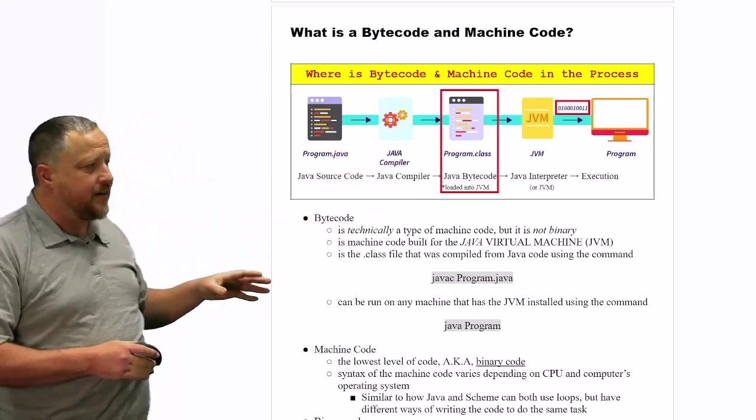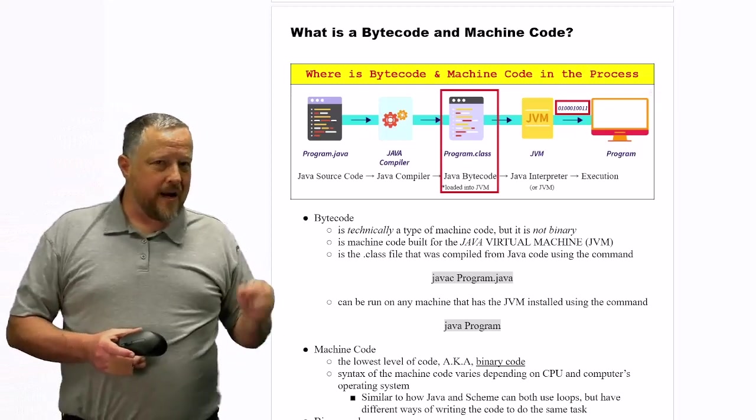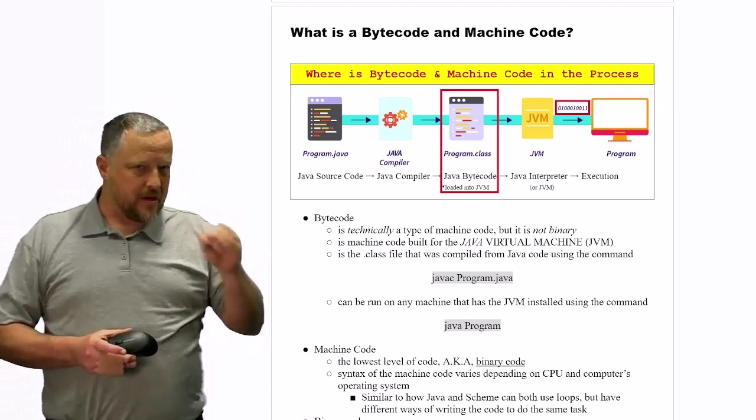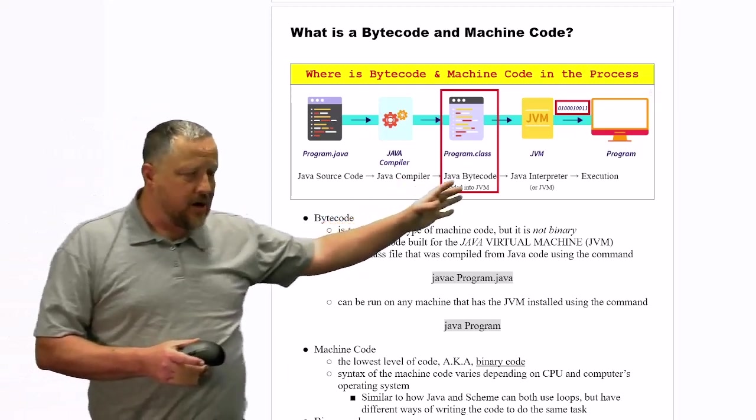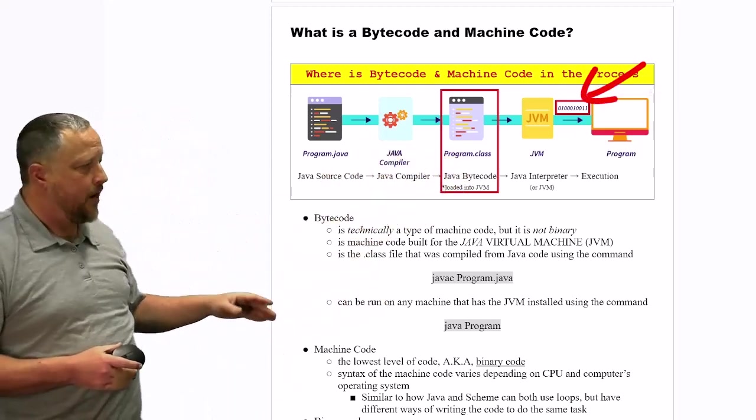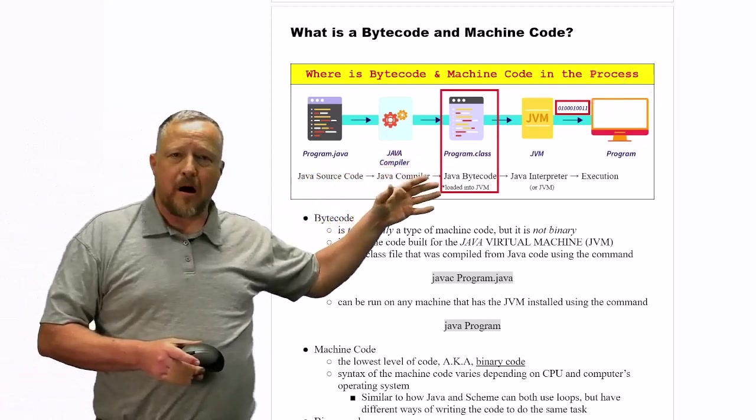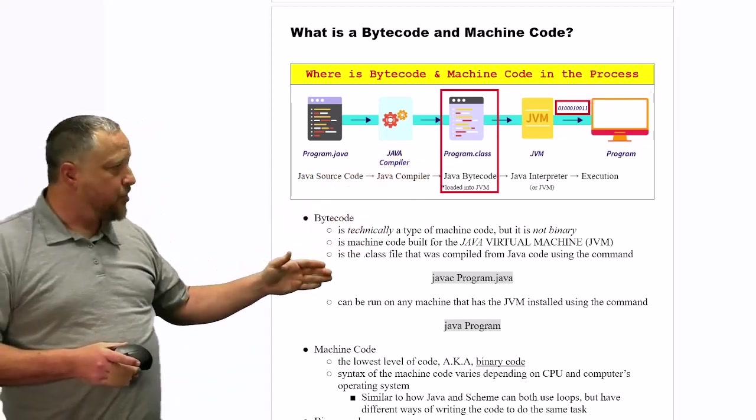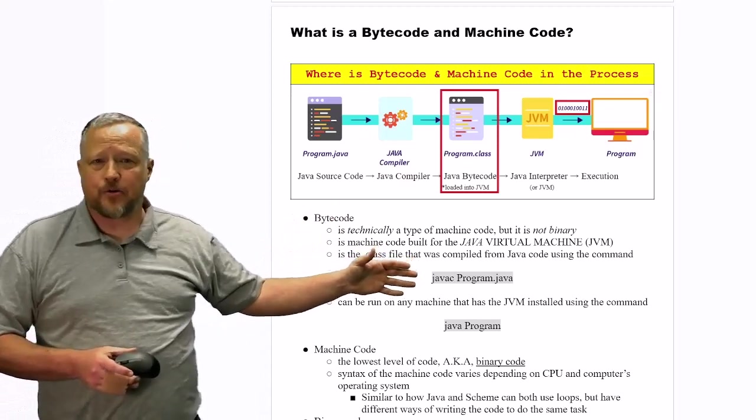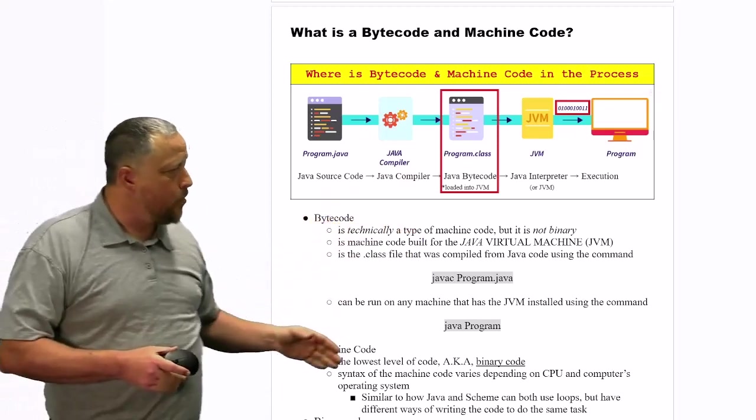Bytecode is technically a type of machine code, but it's not binary yet. That's because it's going to be interpreted by the JVM into that later on. It's actually that .class file that when you and I compile in Java, we can do that with their compilation if we happen to do it manually with javac, with a C meaning compile in our program.